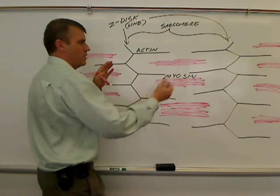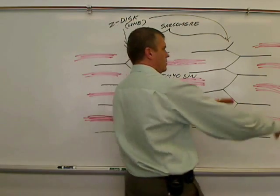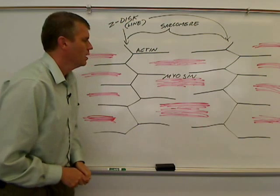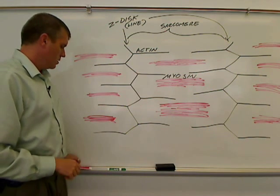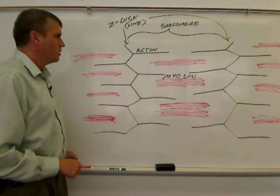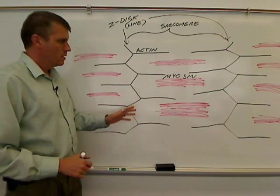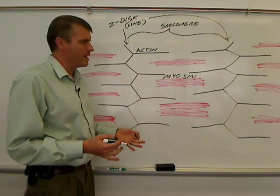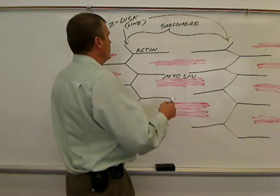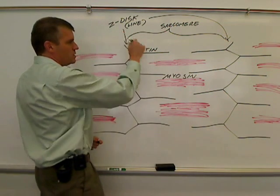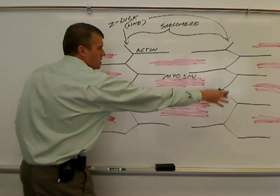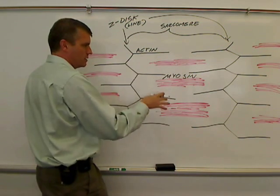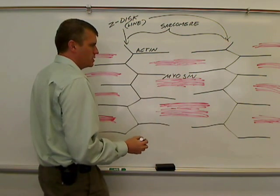So we have a sarcomere here, we have a sarcomere here, and we have a sarcomere over here. On this molecular level, several things have been named. We've already given you Z-disc or Z-line on either side, and then the actin and the myosin protein.